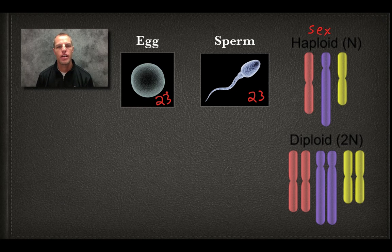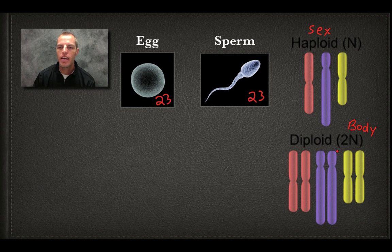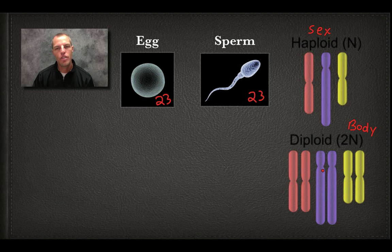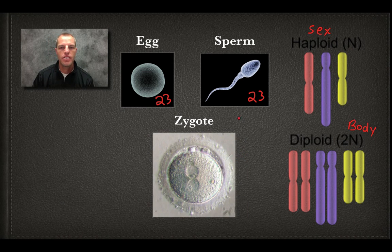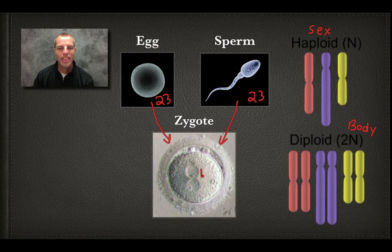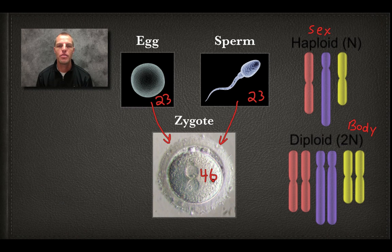Diploid cells are our body cells — sometimes called somatic cells — and they have 46 chromosomes, or two sets of chromosomes. When the sperm and egg join together and fertilize, what we get is a zygote, which is a combination of the sperm and egg. When you add 23 from the sperm and 23 from the egg, that new zygote now has 46 chromosomes, which is what humans have in our body cells.